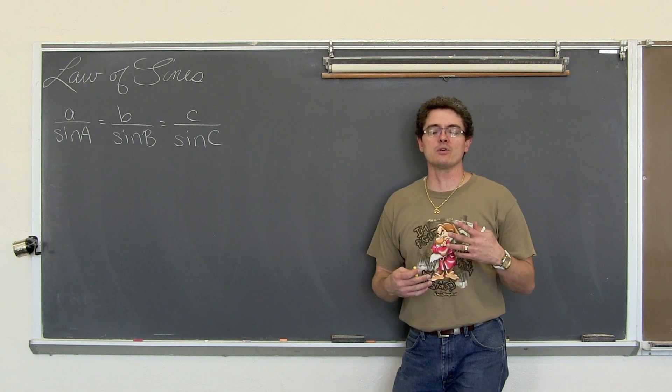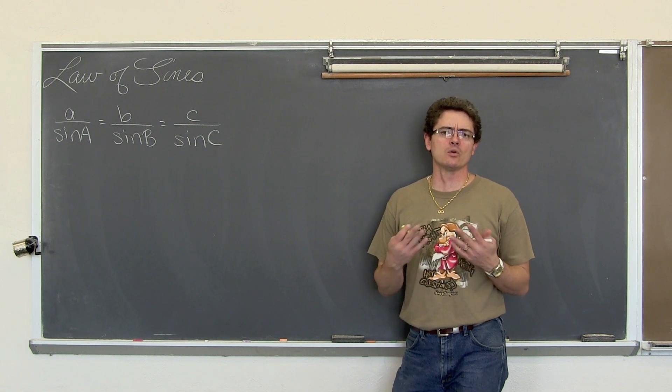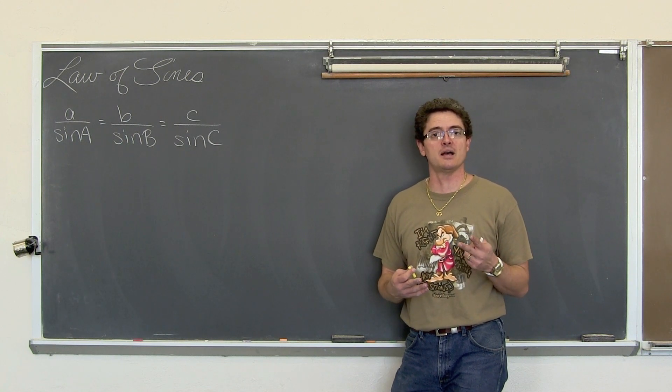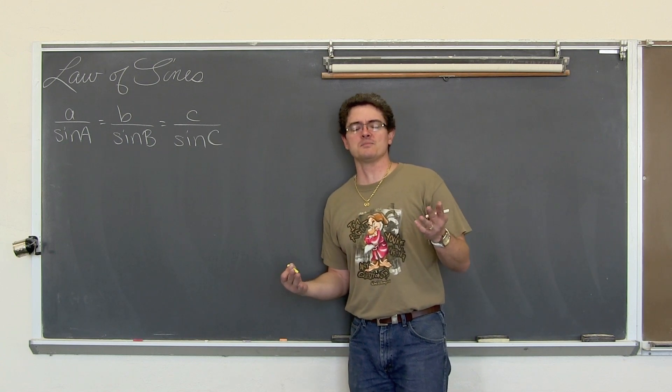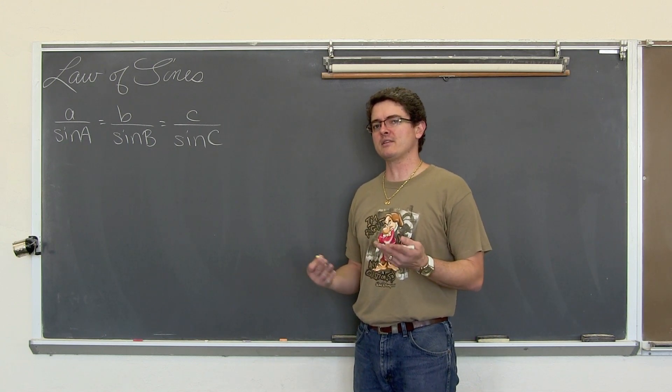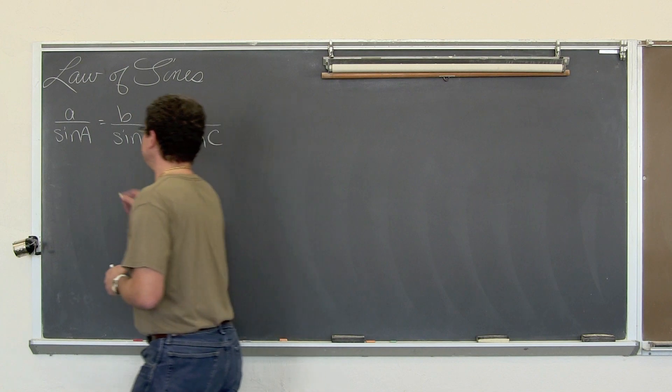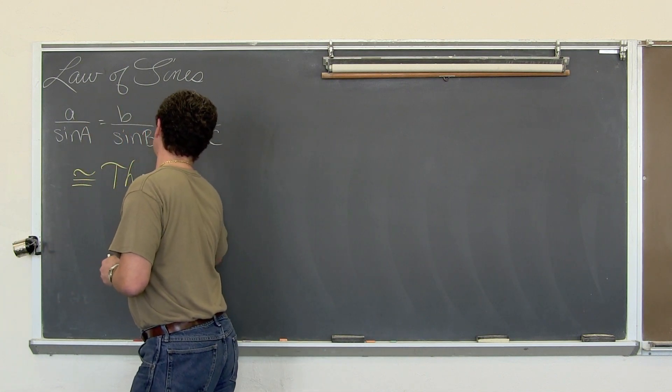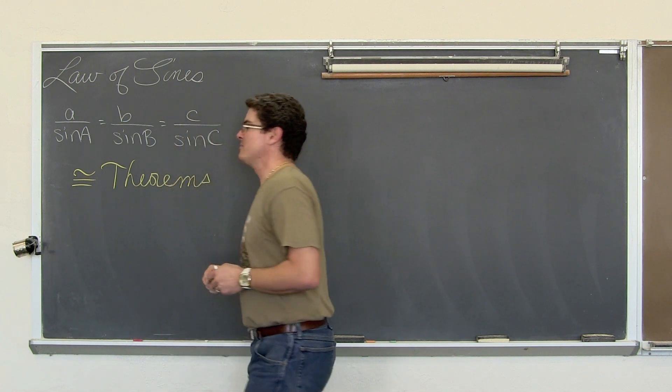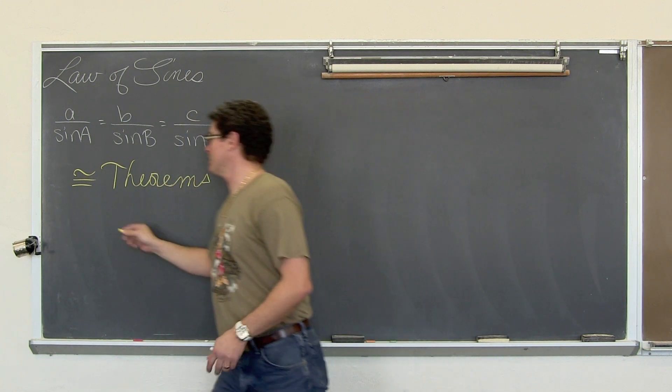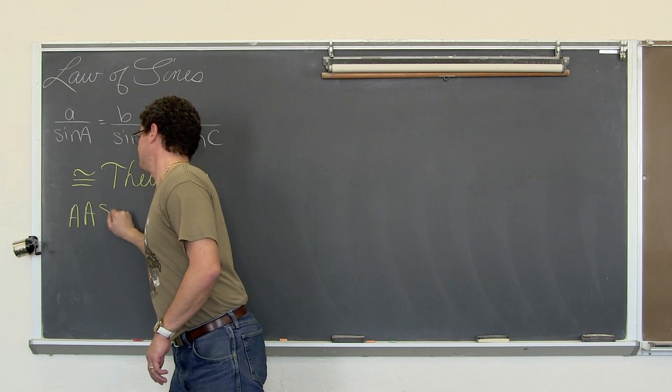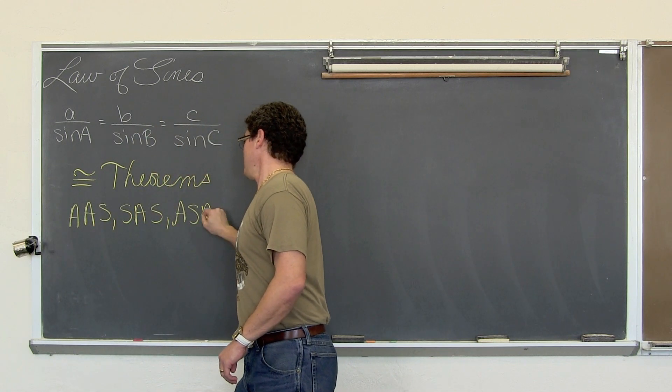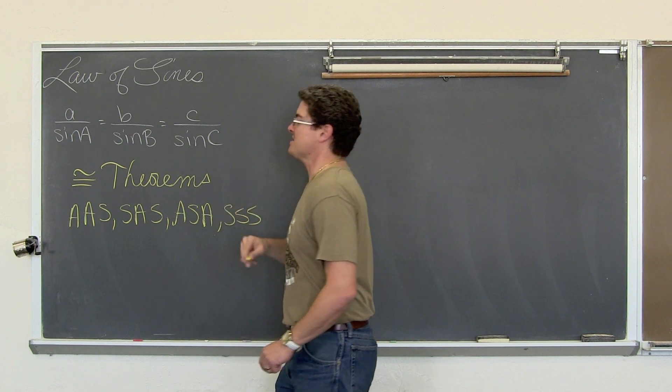As we look at these problems today, we need to keep in mind some geometry postulates or theorems that you learned a couple of years ago. The congruency theorems you learned for proving that two triangles were congruent, or the same size and shape.